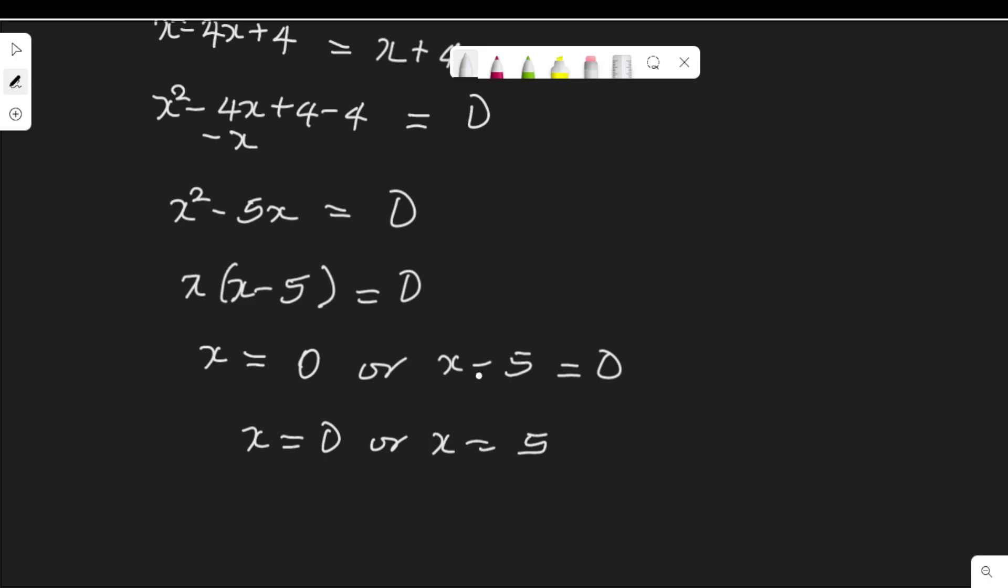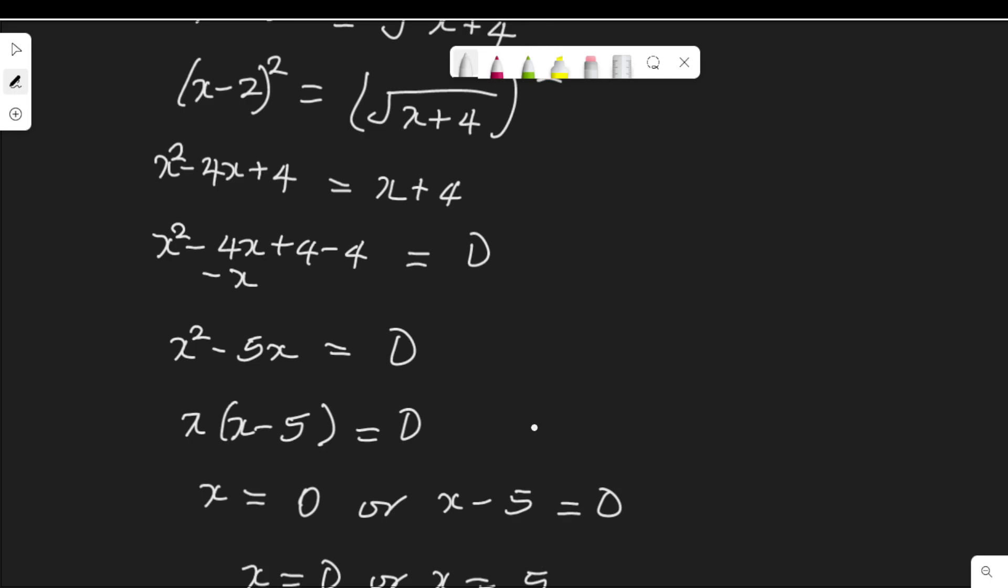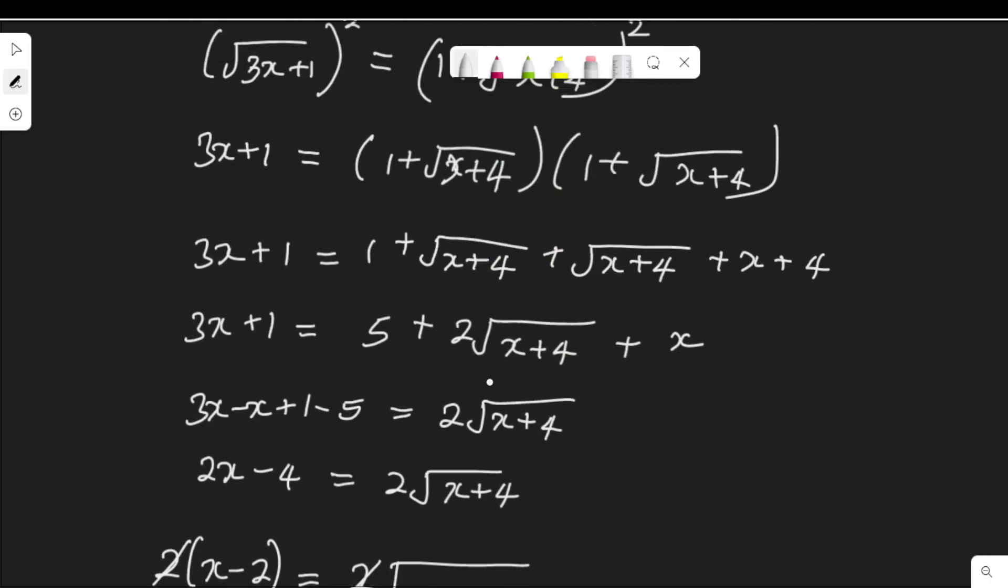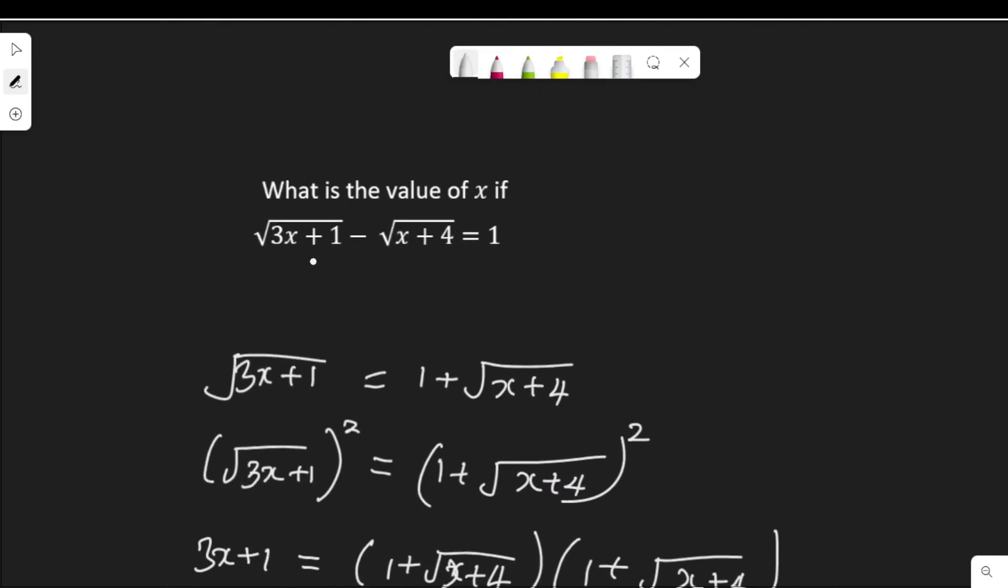So let's check which of these values satisfy the equation, whether x = 0 or x = 5. The equation says √(3x+1) - √(x+4) = 1.